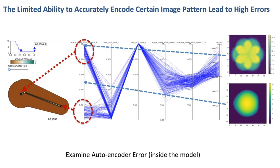By examining the model's autoencoder errors and the corresponding images, we notice that the limited ability of the autoencoder to accurately encode more complex images is likely the main contributor to the binary pattern we observed in the output errors.